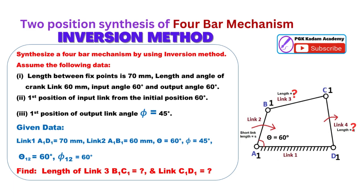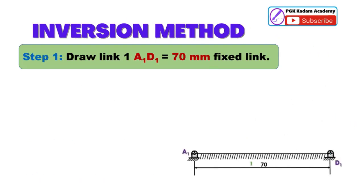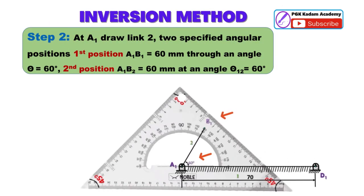We have to draw a four-bar mechanism and determine length of link 3, link B1C1, and length of link 4, link C1D1. Step 1: Draw link 1, A1D1 equal to 70 millimeters, which is the fixed link.